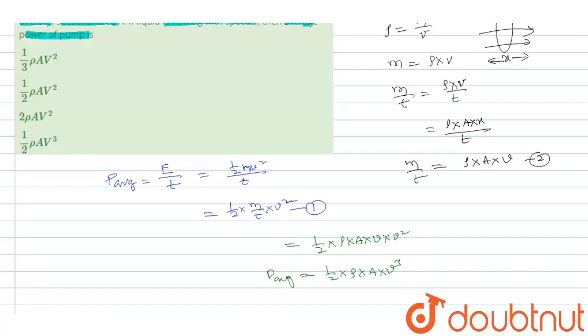If you see the options, option 1 is wrong, option 2 is also wrong because option 1 has V² only there. Here also V² is there. Here also V², it is wrong. Only final answer, half ρAV³ is correct.